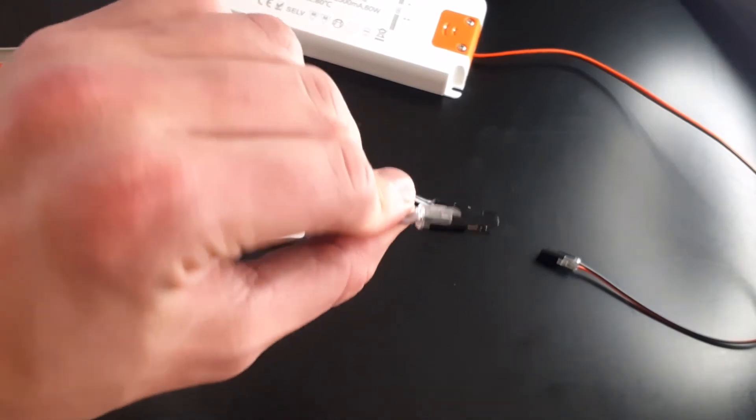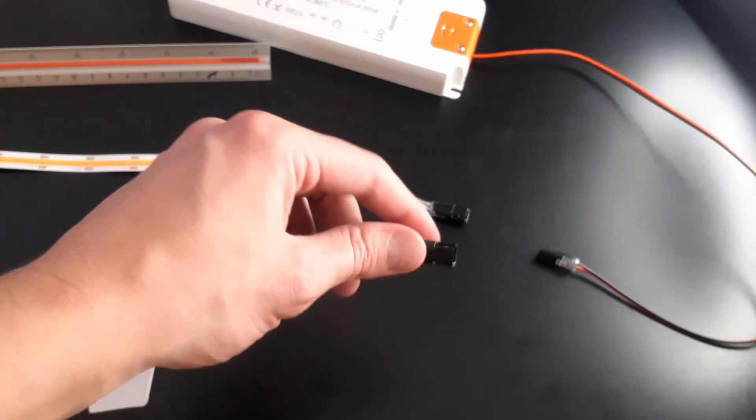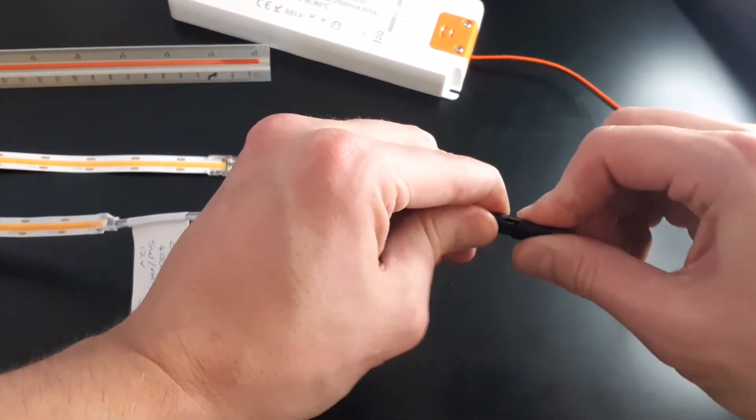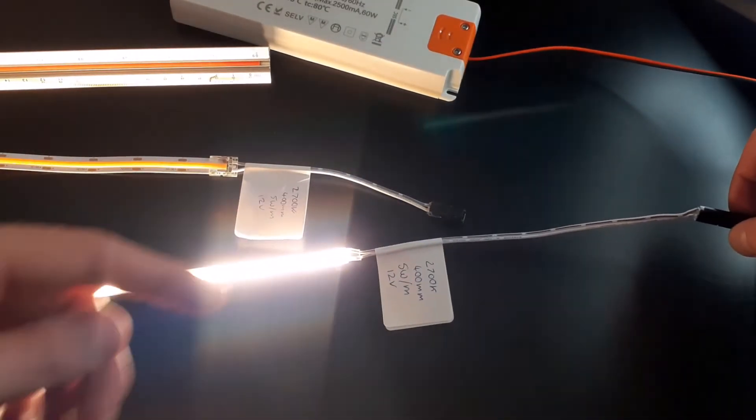And as you can see we put a sleek bullet connector on this end and we can simply push this in again to illuminate the strip from the power supply.